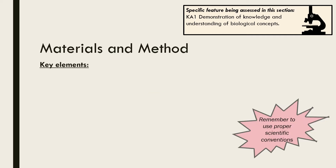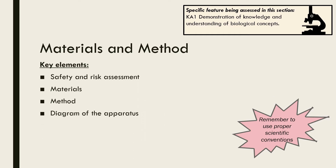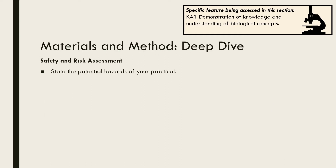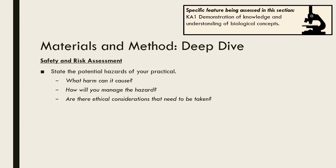As the section title suggests, it is in this part of the report that you list the materials required and the method followed. You also need to include a safety and risk assessment and a labelled diagram of the apparatus where appropriate. In the safety and risk assessment, you need to state the potential hazards of your practical, outline any potential harm it could cause, and how you will manage the hazard, including any control measures that will be taken. If applicable, you may also need to consider any ethical considerations. The simplest and most concise way to present your safety and risk assessment is in a table format such as this one.